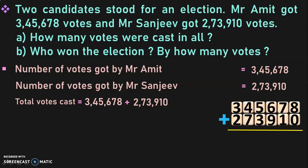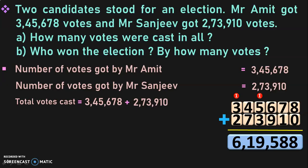Let us add them. Begin from the one's place: 8 plus 0 is 8. 7 plus 1 is 8. 6 plus 9 is 15 — write 5, carry 1. 1 plus 5 is 6, 6 plus 3 is 9. 4 plus 7 is 11 — write 1, carry 1. 1 plus 3 is 4, 4 plus 2 is 6. The total votes cast is 6,19,588.